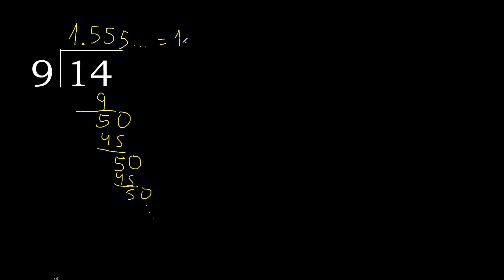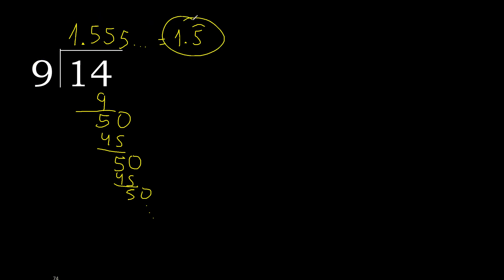After the point, 5 repeats — therefore like this: 14 divided by 9 is 1.555... (5 repeating).